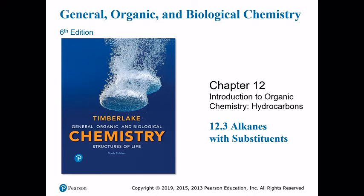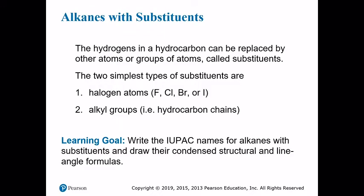This is Chapter 12, the Introduction to Organic Chemistry, and Section 3 is about alkanes with substituents. The hydrogens in a hydrocarbon, such as a typical alkane, can be replaced by other atoms or groups of atoms called substituents. The two simplest types are halogen atoms — fluorine, chlorine, bromine, and iodine — and alkyl groups, which are smaller hydrocarbon chains attached to the larger main chain. We'll learn how to write IUPAC names for these structures, as well as draw their condensed structures and line angle formulas from the name.